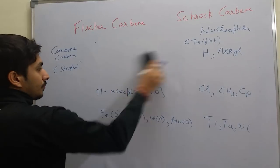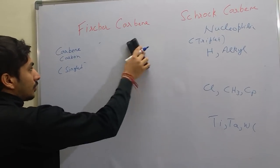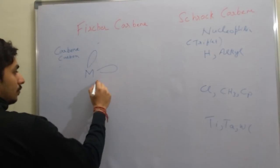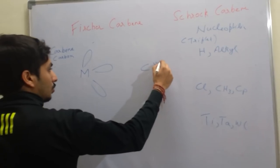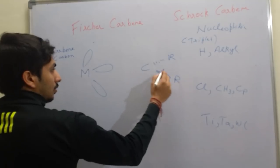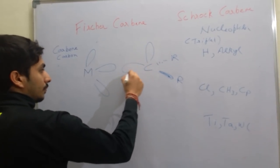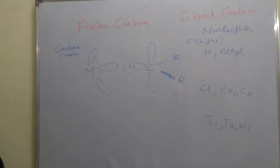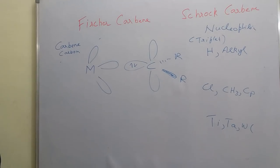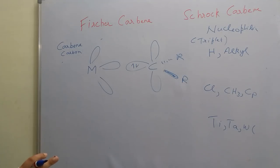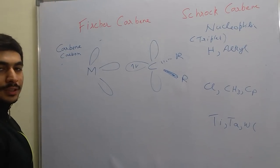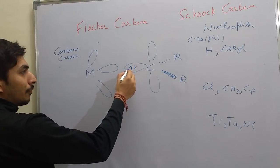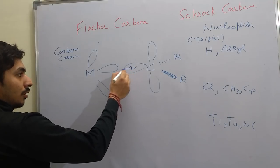Now let's look at Fischer Carbenes. The carbene carbon is in a singlet state. The metal has d orbitals, and the carbene carbon has two substituents and two p orbitals. In singlet carbene, both electrons are present in the same orbital. For bond formation between metal and carbon, a coordinate bond is formed — the two electrons are donated to the metal's empty orbital via sigma donation.